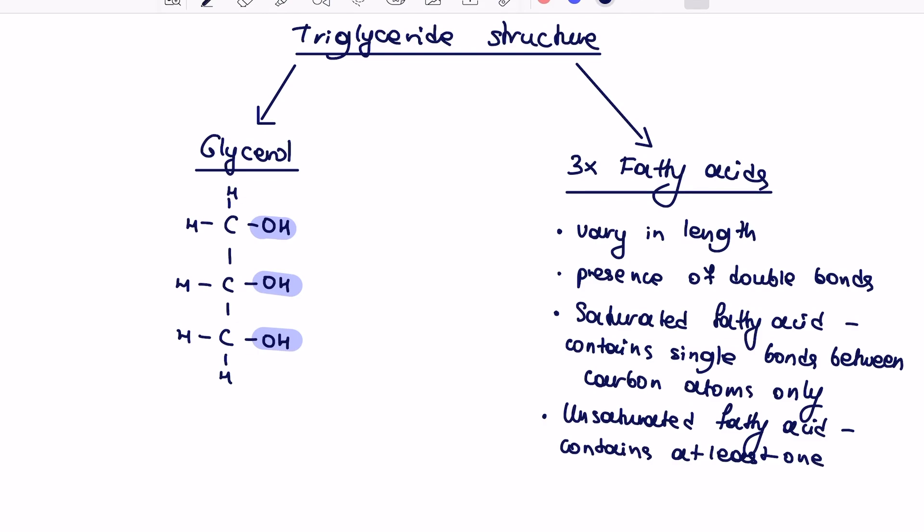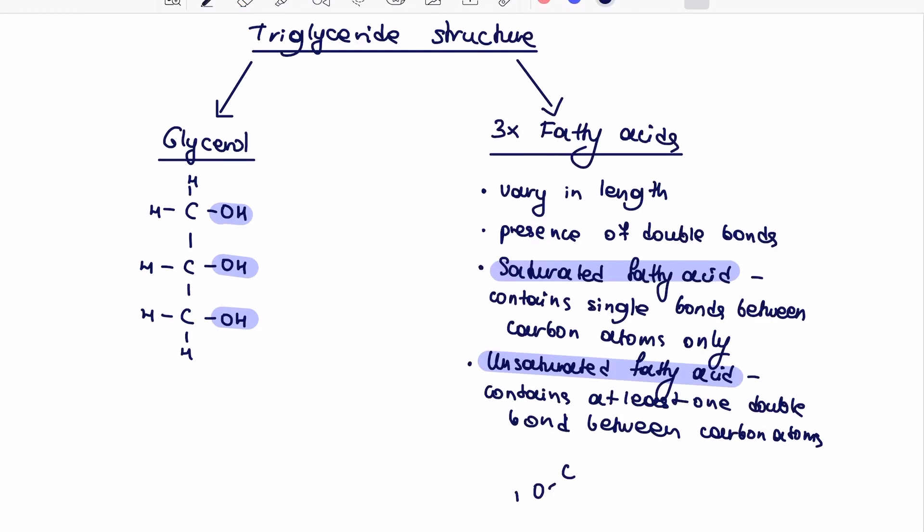I can't stress enough how important it is to say between carbon atoms, because if you don't put that in exam, that basically loses your mark straight away. Quite commonly students will say there is a double bond in the unsaturated fatty acid. But remember, fatty acids contain a CO double bond as part of carboxyl group, which I've just drawn.